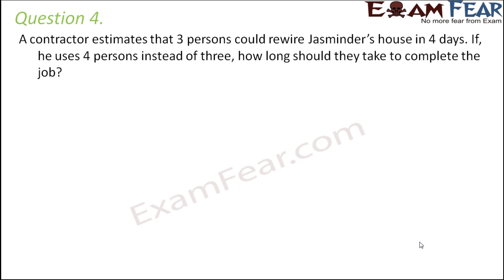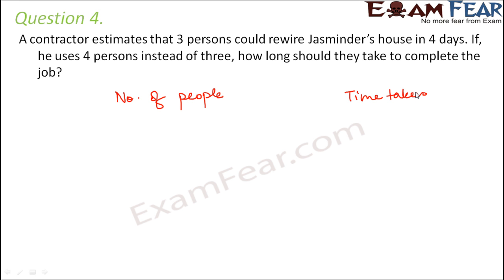Question 4: a contractor estimates that three persons would repaint Jasminder's house in four days. If he uses four persons instead of three, how long should they take to complete the job? Here again we are dealing with two quantities: the number of workers and the time taken to complete the work. If you increase the number of people, the time taken reduces, so number of people is inversely proportional to the time taken.